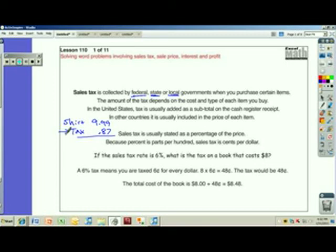In other countries it is usually included in the price of each item. So they actually show you when they have the price tag on something, it includes the tax in other countries. Sales tax is usually stated as a percentage of the price. Because percent is parts per hundred, sales tax is cents per dollar.